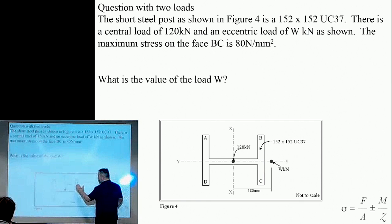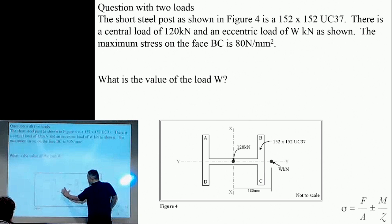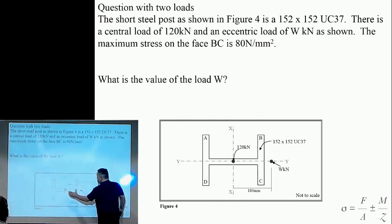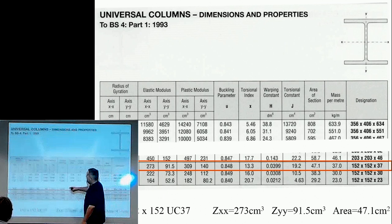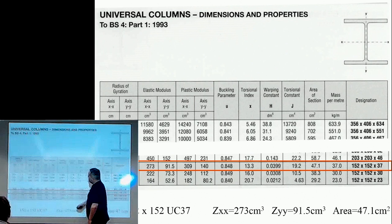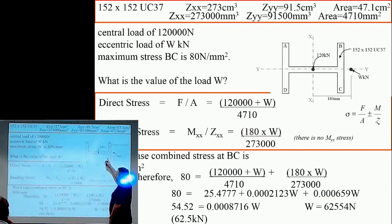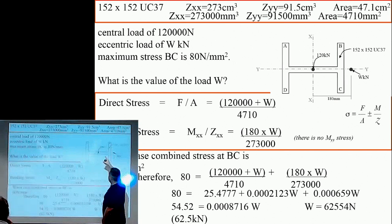The main thing to look at is that when we're looking at our bending stresses, we're going to be looking at stresses about the XX axis. There's no moment about the Y axis, because the moment would be force times by the distance, and the distance is zero. So all we need is our ZXX value, which is 273 centimeters cubed. I've just got to put everything into millimeters. At the top, what we have is all of the values taken from the table.